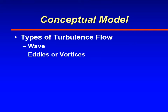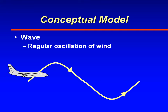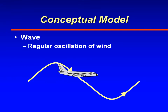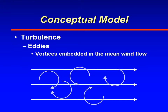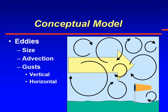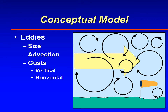You can visualize turbulent flow as either waves or eddies and vortices. The wave is just a regular oscillation of the wind, and as the aircraft flies through this wave, it experiences updrafts and downdrafts. Eddies are little vortices embedded in the wind flow, and they move along with the mean wind flow.